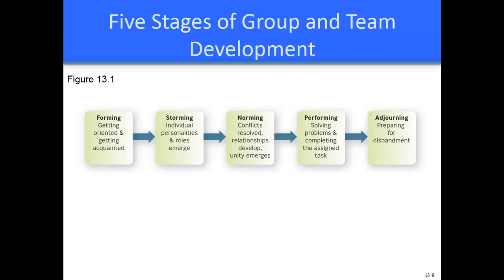The third stage is norming, where conflicts are resolved, close relationships develop, and unity and harmony emerge. The group may now evolve into a functioning team. Teams set guidelines for what members will do together and how they will do it, and questions about authority are resolved through unemotional group discussion. Group cohesiveness — a 'we feeling' binding group members together — is the principal byproduct of stage three. The leader should emphasize unity and help identify the team's goals and values.